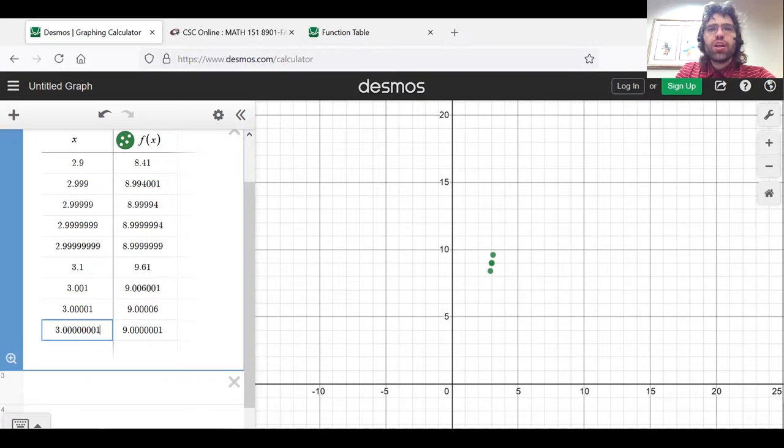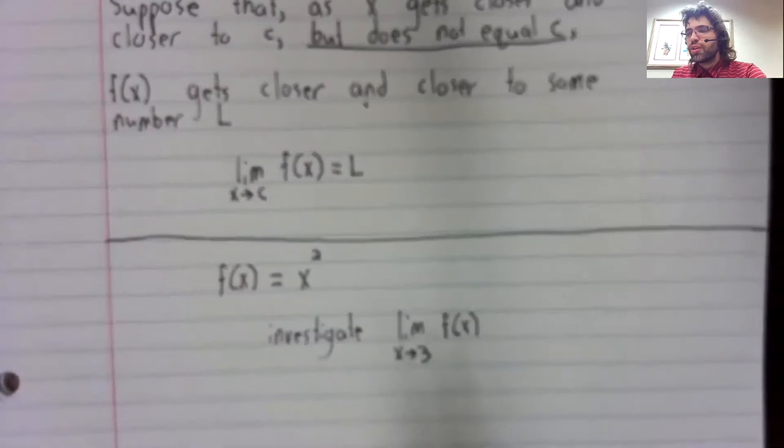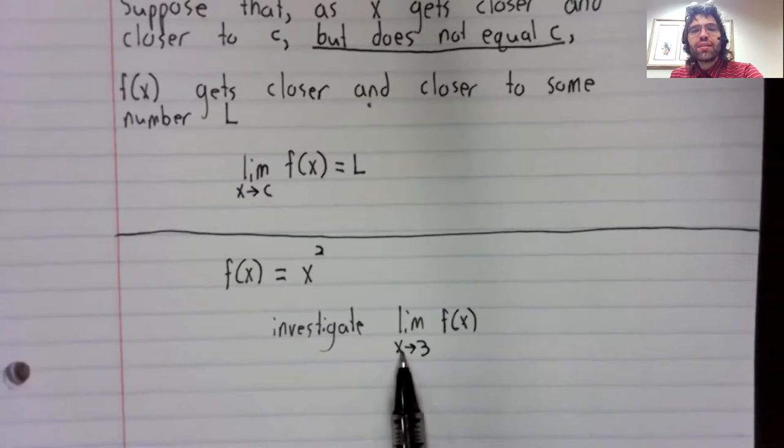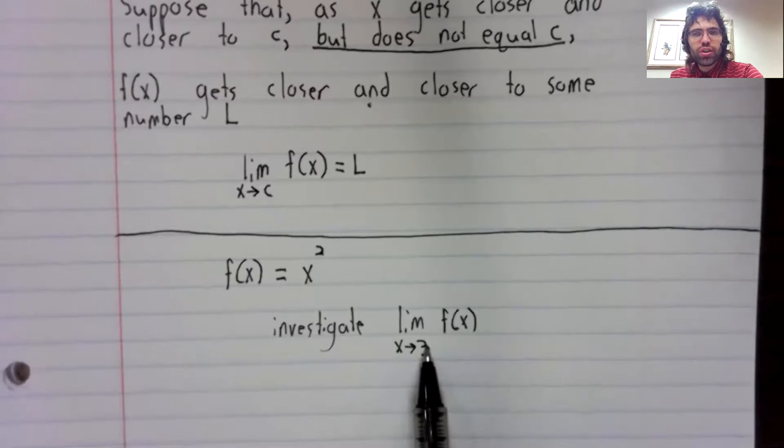The idea behind a limit is that you let x get closer and closer to this number, but you don't let x equal it.